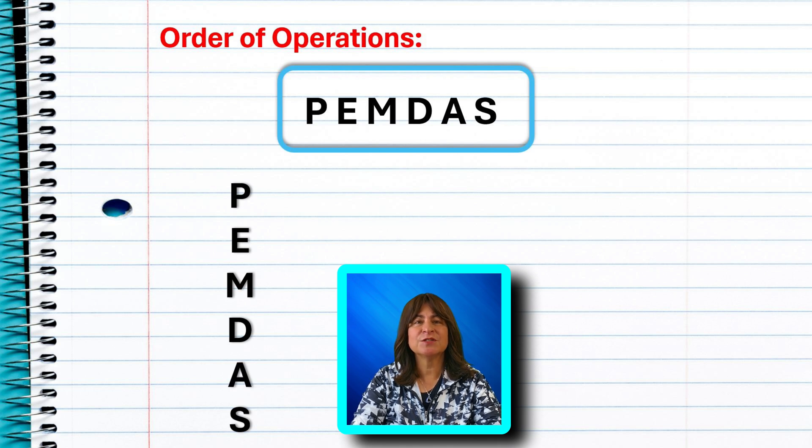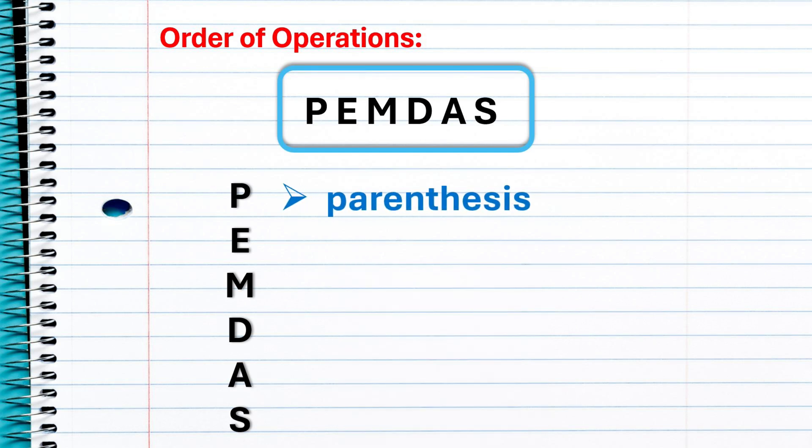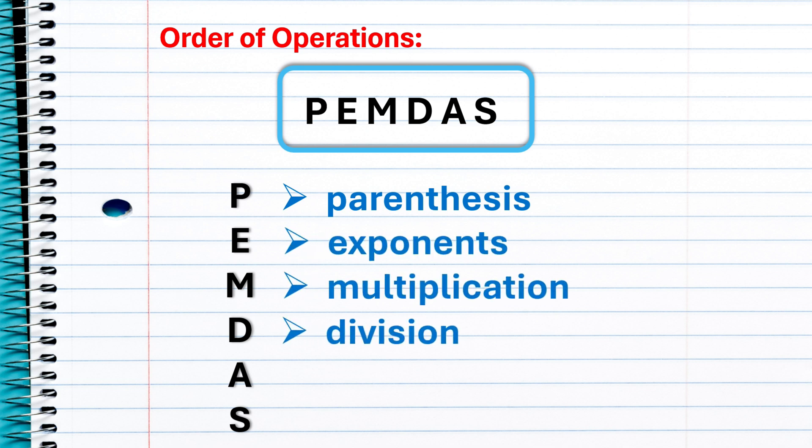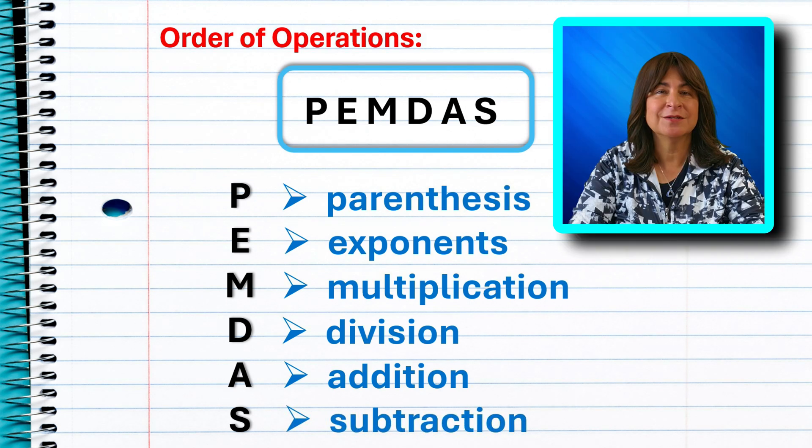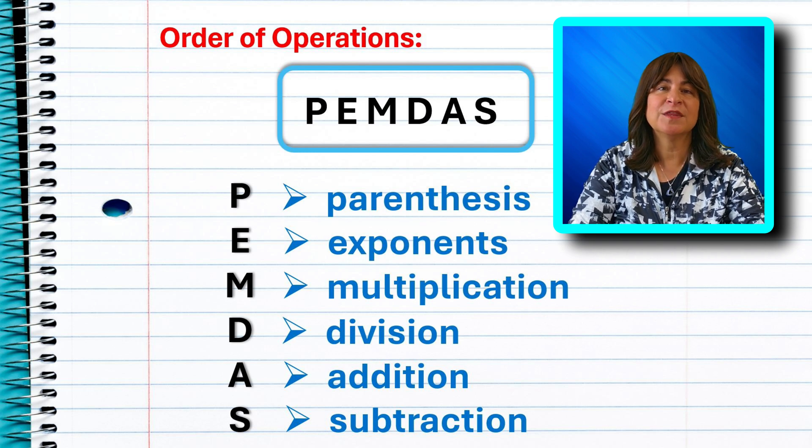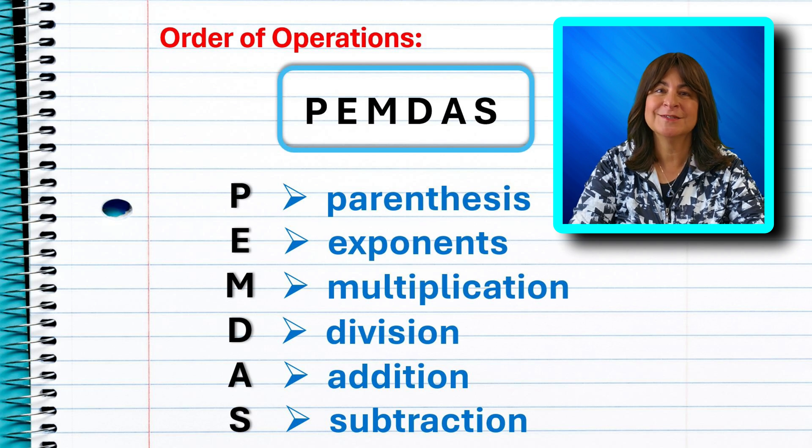PEMDAS tells us that the P goes first. P is for parentheses. Then comes E, exponents. Then M, multiplication. Then D, division. Next A is addition. And finally S for subtraction, right? Or not? Which comes first, multiplication or division? Does it matter? The way PEMDAS is written, you would think multiplication always comes before division. How about addition and subtraction? Does addition have to come before subtraction? After all, that's how PEMDAS is written, with M before D and A before S, right? Or not?